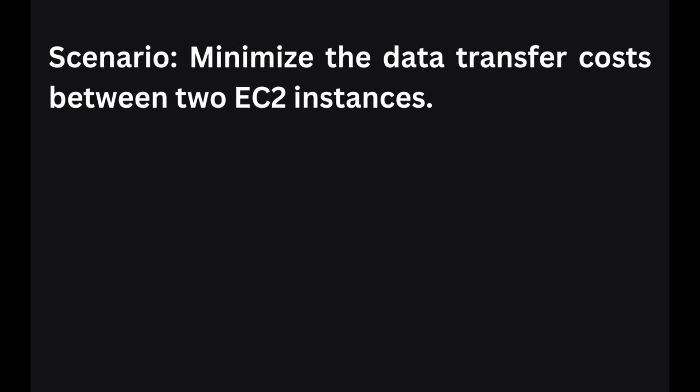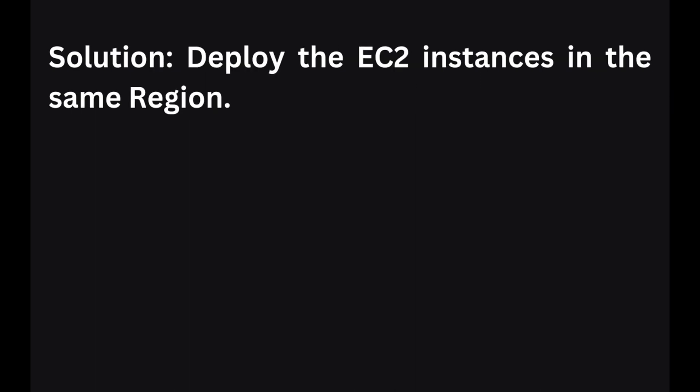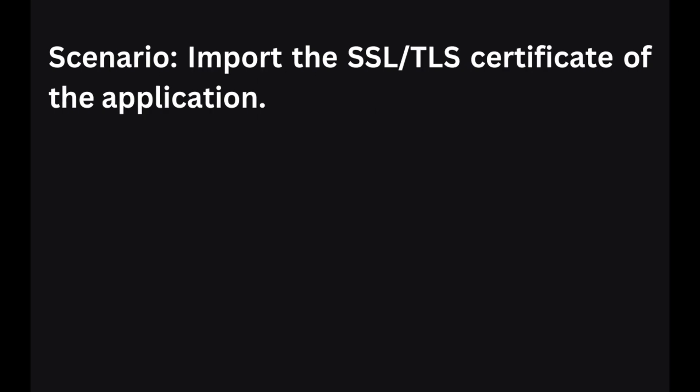In the next scenario, you want to minimize data transfer costs between two EC2 instances. To minimize data transfer costs between two EC2 instances, you can deploy the instances in the same region. By keeping the instances in the same region, data transfer between them is typically not charged at all.